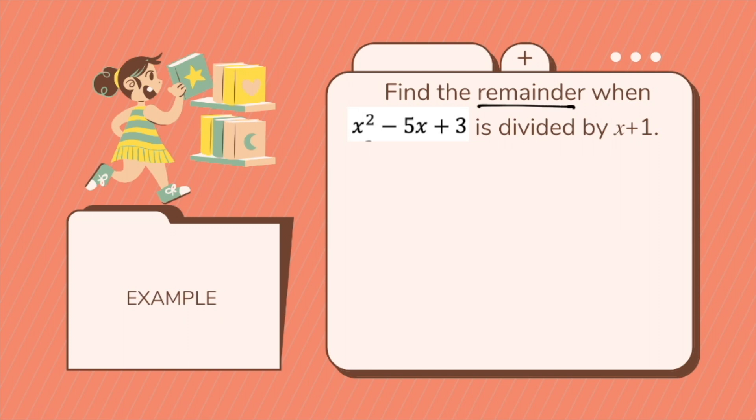Now let's look into another example. Find the remainder when x squared minus 5x plus 3 is divided by x plus 1. So you are asked that there is indeed a remainder but you have to solve it. So we use the remainder theorem.